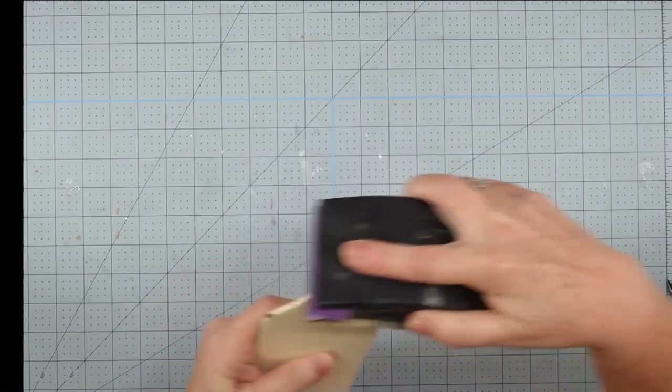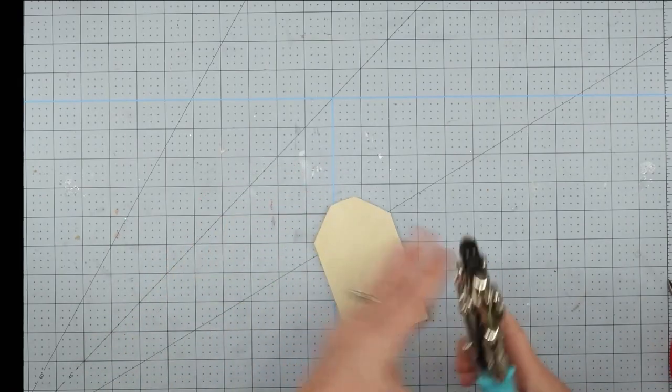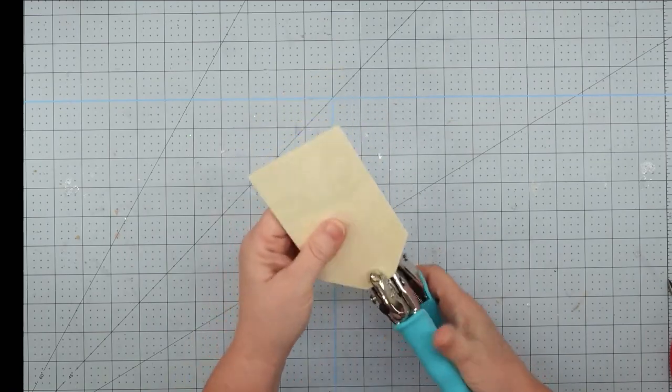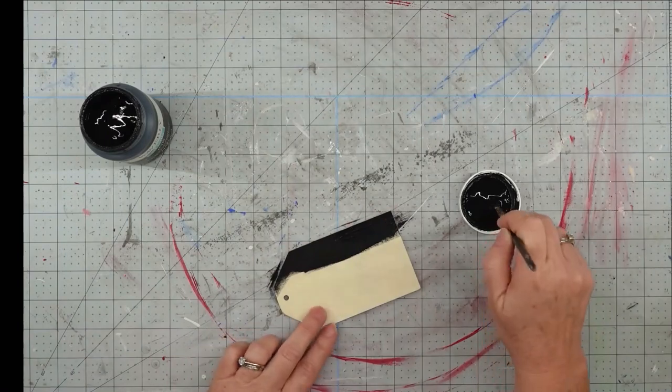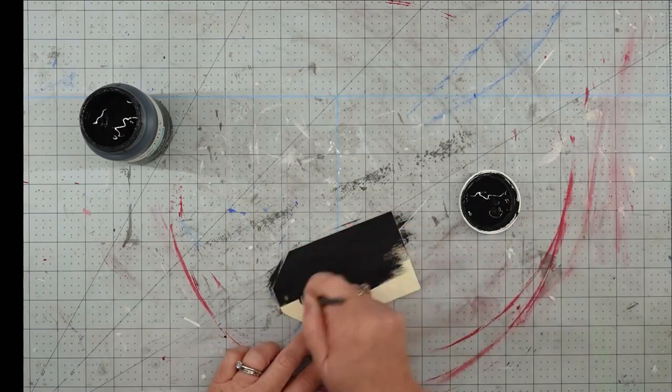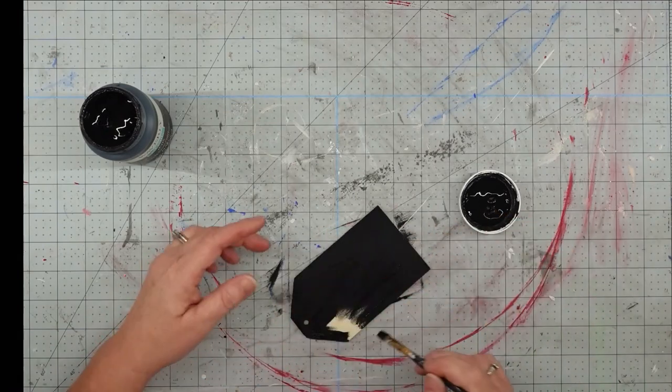Now I'll just take my sanding block and take off any splinters that were left at the top and then I'm going to use my hole punch and punch a hole in it to make a cute little tag. Now we'll take my Waverly chalk paint in ink and I'm going to give the whole thing a really good coat of paint front, back, and sides, and then I'll set that aside and let it completely dry.